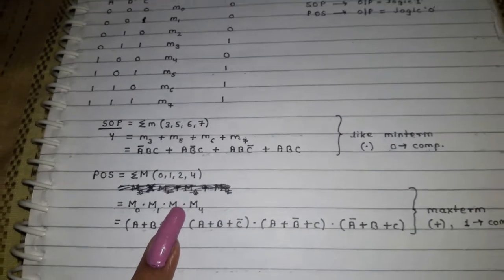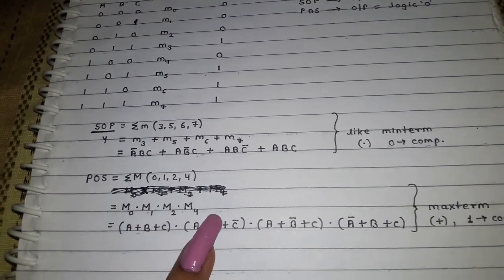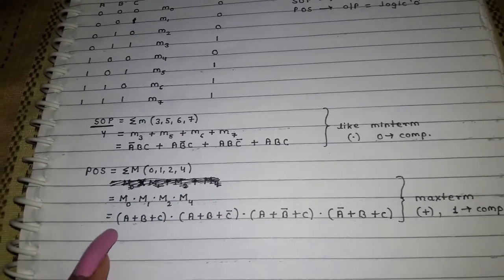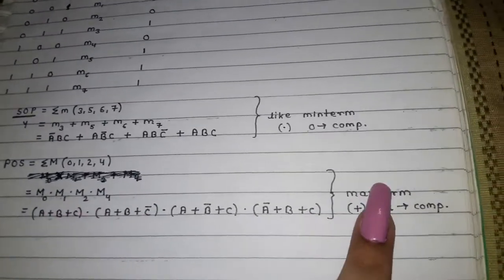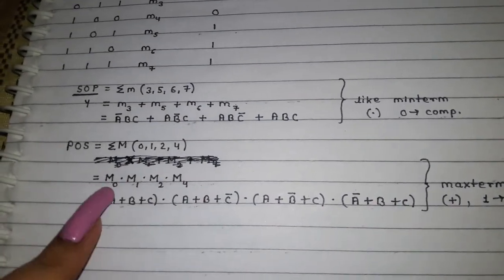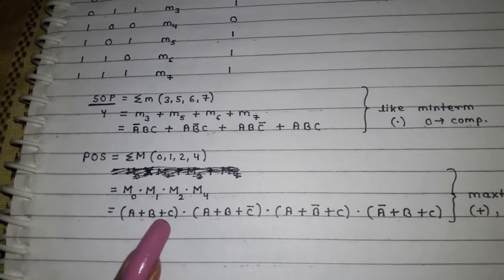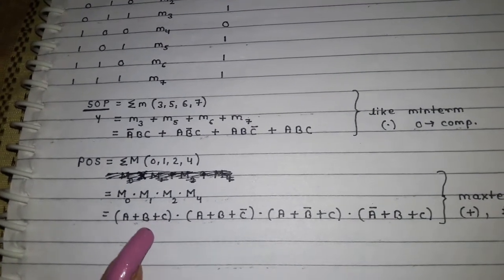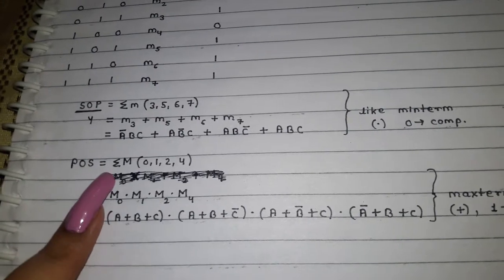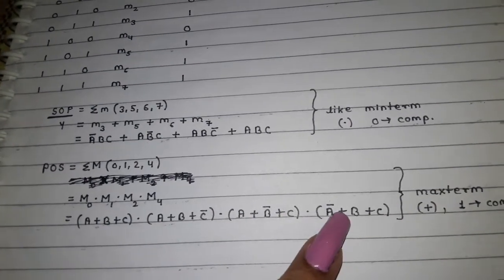One more thing to keep in mind: for SOP form you write small m, and for POS you write capital M. So it will be written as M0, M1, M2, and M4. For writing these using maxterm, we use plus (OR) and one is complemented. For M0, all inputs are zero so none of them are complemented. It is called Product of Sums — each term is a sum, and you are multiplying them together.